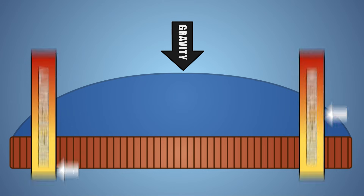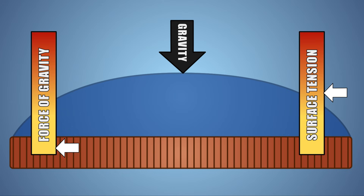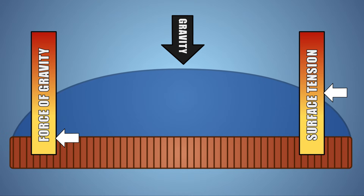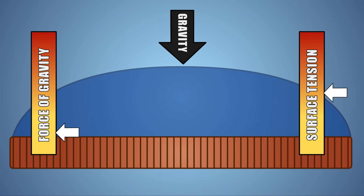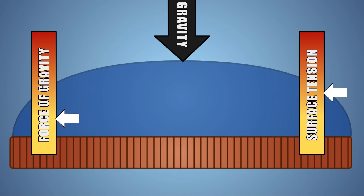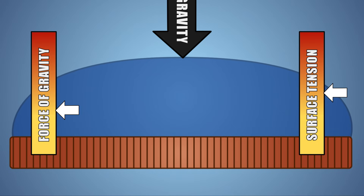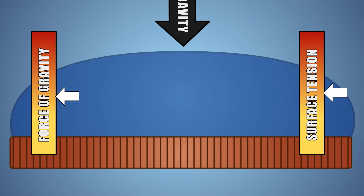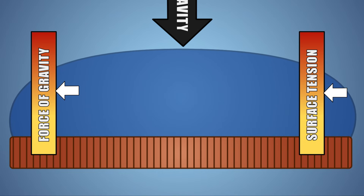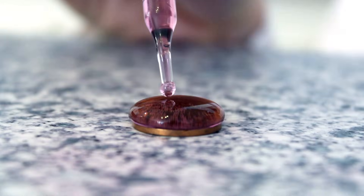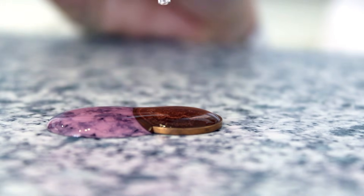Gravity presses down on our droplet, and when the surface area is small, the cohesive forces within the droplet are much stronger than gravity, and the droplet is able to hold its shape. The more liquid we add to our droplet, the more molecules are added, and the larger the droplet's size and surface area gets. As the surface area of our droplet increases, the amount of force that gravity exerts on our droplet also increases, causing the cohesive forces inside the liquid to struggle to hold its shape. Eventually, when enough liquid has been added, the amount of gravity pushing down on the droplet will overpower the cohesive forces within the liquid, causing the droplet to pop and its liquid will spill over the edges of the penny.